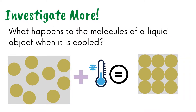What happens to the molecules of a liquid object when it is cooled? The molecules of liquid objects are not compact. When a liquid object is cooled, its molecules will move closer together. This is why liquid objects solidify. The molecules stop moving and form a closer bond with each other.